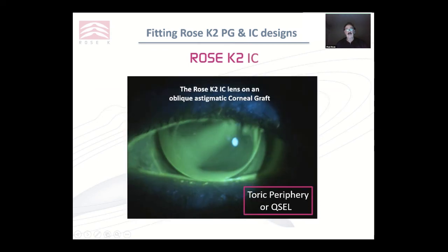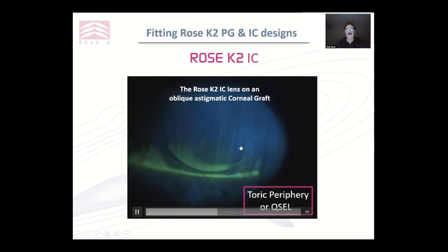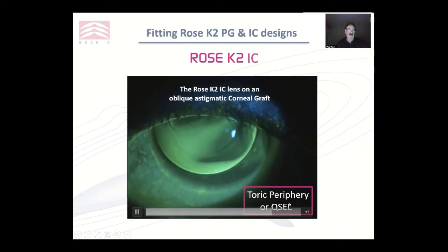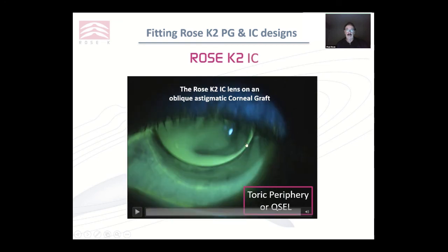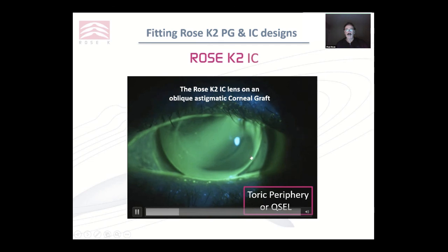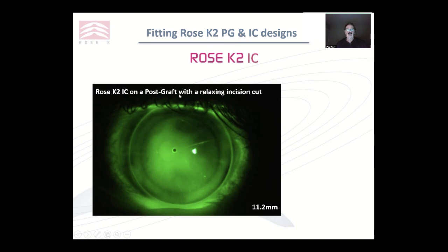This is IC on an oblique astigmatic graft — not an ideal fit. You can see we've got touch here and we're getting a little lift-off in this area. How would you improve it? Could we use a toric periphery? I can't see what's happening up here, so I can't tell you. If we had the same pattern up here as we had here, I would use a toric periphery. Otherwise, I would think about using a quadrant-specific edge lift where I'm going to make the edge lift higher in this quadrant.